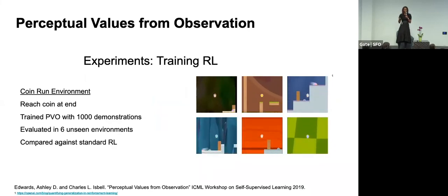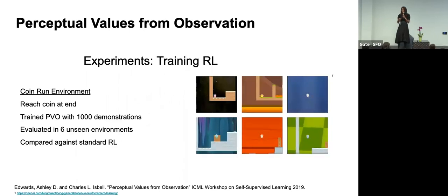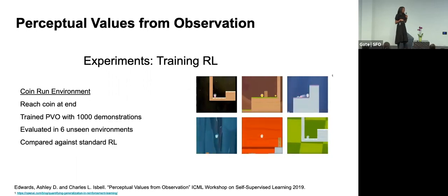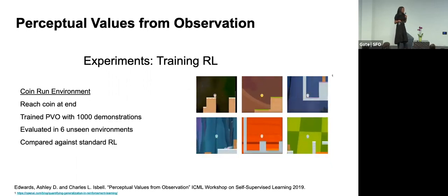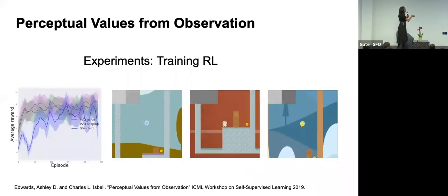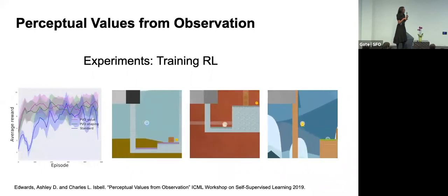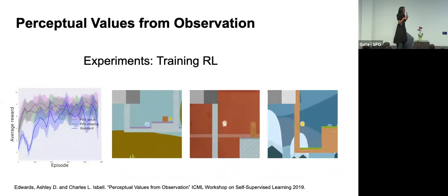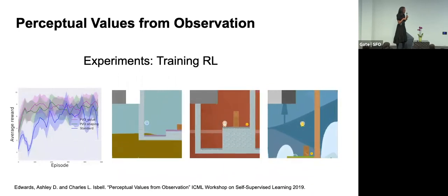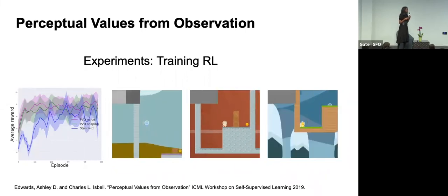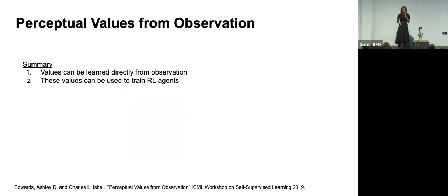Now I'll show whether these values can actually be used to train reinforcement learning agents. This environment is Coin Run — a randomized environment with random colors and random backgrounds where the agent must reach a coin at the end of a platform game. We test in unseen environments and show the agent is able to learn to reach the coin. Our approach using both mechanisms for training the RL agent learns more quickly than a standard reward function that gives a reward of one for reaching the end.